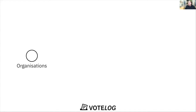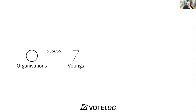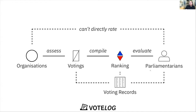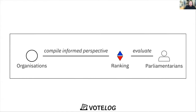What we want to do is empower organizations — think Gewerbeverband, Amnesty International, Hotel, Mieterinnen, Mieterverband — organizations that are already undertaking lobbying efforts and are already publicly acknowledging their position on specific topics. We want to give them the ability to assess voting, then look at the voting records and compile a ranking through that to evaluate the parliamentarians. But the important thing here is that organizations can't directly rate the parliamentarians. It's always fact-based and it's always transparent what voting has been assessed.